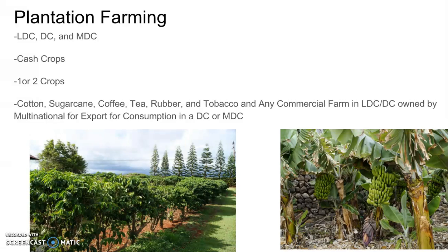Sugarcane grown in the Caribbean is plantation farming. Coffee is plantation farming, grown in tropical climates all along the equator — along the Amazon in South America, through southern Africa, and through Southeast Asia. Coffee is one of the most valuable traded commodities in the world. Tea is also plantation style, much of it in South and East Asia. Rubber is also plantation farming, from either rubber trees or synthetic rubber.